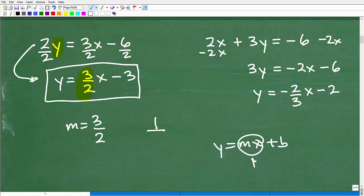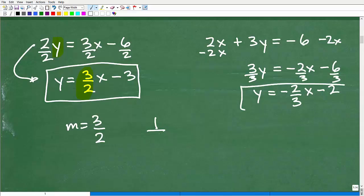If you're struggling with the mechanics here, you need to go back and do some extra work on solving for particular variables, working with linear equations. At this point, I need to solve for y, so I'm dividing everything by 3. The result of doing that is going to be y equals negative 2 thirds x minus 2. So the slope of this line is negative 2 thirds.